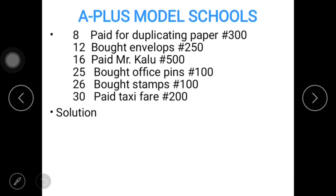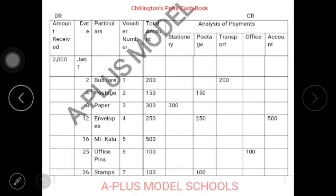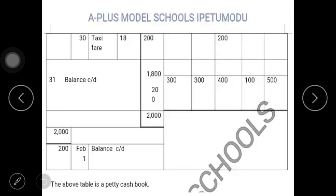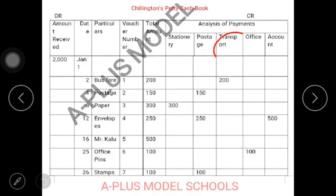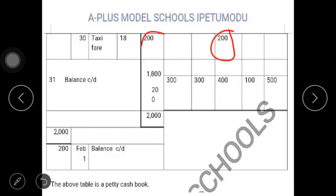January 30: paid taxi fare, 200. You know where that will go — it falls under transport. January 30 is the date; you have your taxi fare, which is the eighth voucher for the month, falling under your transport column. The total for that day is also 200.